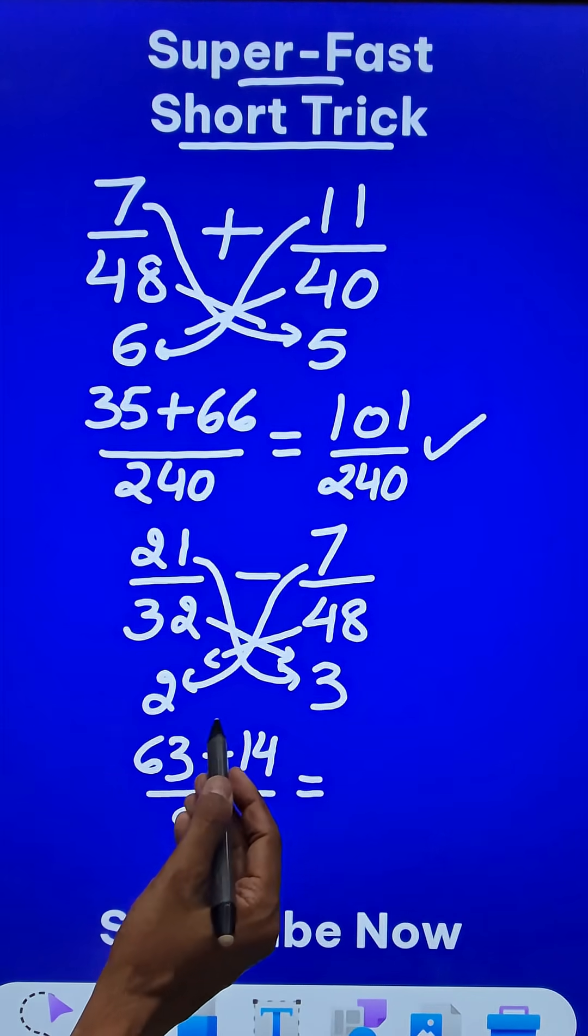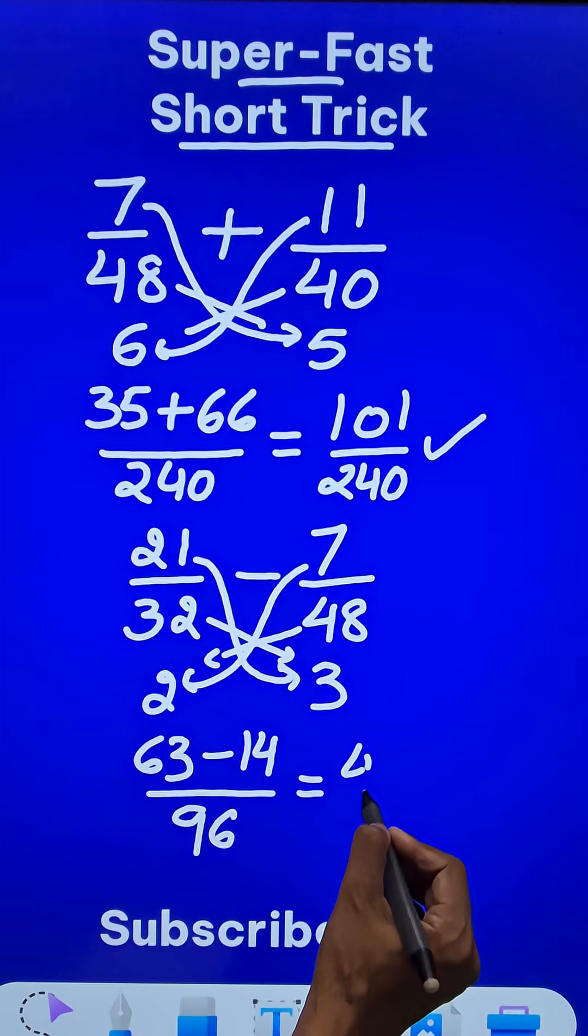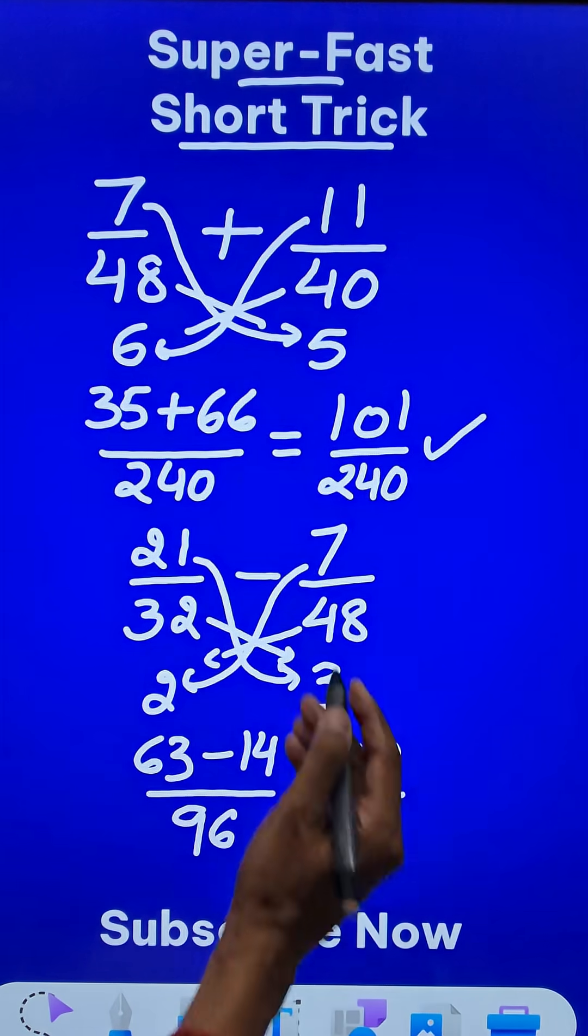So what is the answer? 63 minus 14 happens to be 49. And 49 upon 96 is the answer for this subtraction problem.